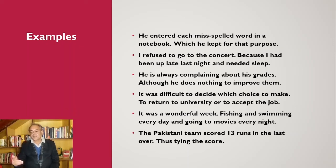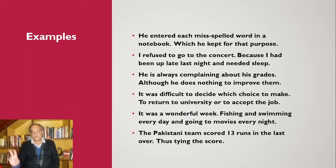'It was difficult to decide which choice to make' is an anticipatory sentence. A colon can follow it, and then you write: 'to return to the university or to accept the job.' These are the two options. Similarly: 'It was a wonderful week: fishing and swimming every day and going to movies every night.' Here the colon completes the entire statement.